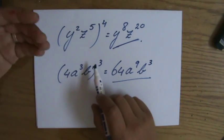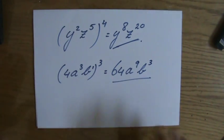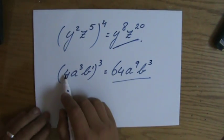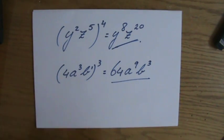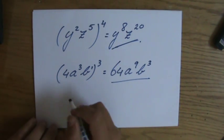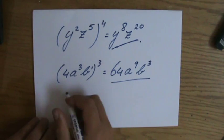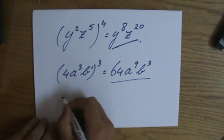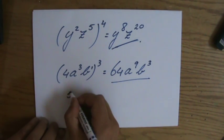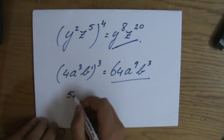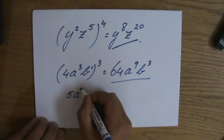A lot of students unfortunately just immediately write down 4a to the power 9, b to the power 3 — but hang on, the 4 is also to the power 3! Don't forget that. The full answer is 64a to the power 9, b to the power 3.